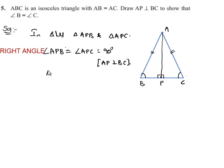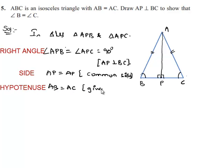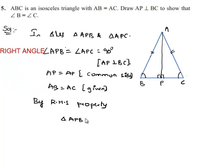Then AP is equal to AP for both triangles as it is a common side. And also AB is equal to AC as given that ABC is an isosceles triangle. Here, by right angle hypotenuse side property, we can say that triangle APB is congruent to triangle APC.